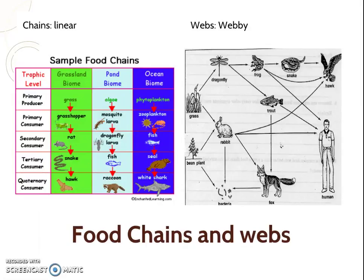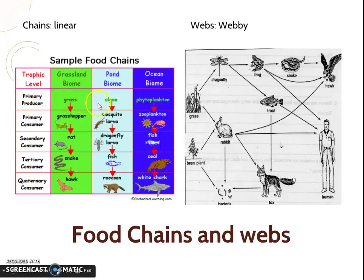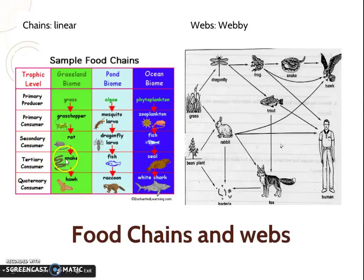We need to remember the difference between a food chain and a food web. A food chain is going to be linear, while a web is going to be webby. You can see on the left here we've got several examples of food chains. Notice we start with a producer — something that makes energy from the sun. Then the next step is going to be an herbivore, something that eats plants. And then something that eats herbivores, and so on until we get to a quaternary consumer, sometimes called an apex predator.